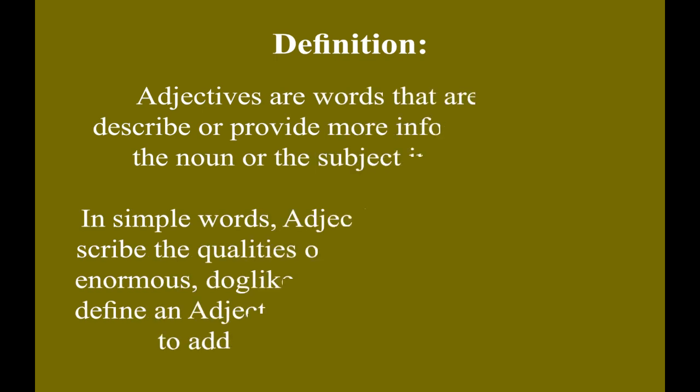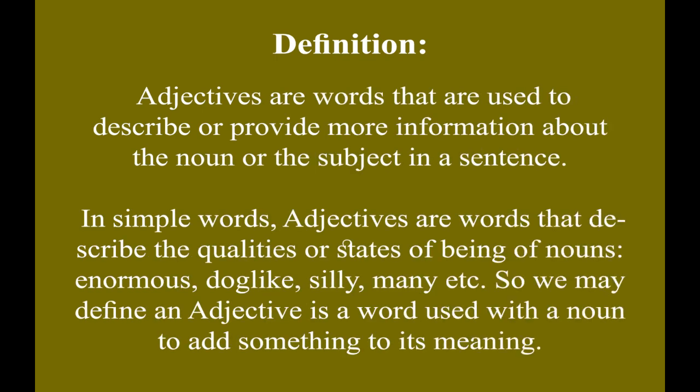Definition. Adjectives are words that are used to describe or provide more information about the noun or the subject in a sentence. In simple words, adjectives are words that describe the qualities or states of being of nouns — enormous, dog-like, silly, many, etc. So, we may define an adjective as a word used with a noun to add something to its meaning.